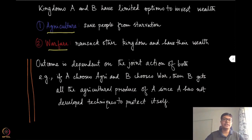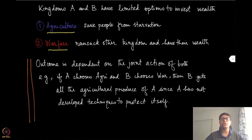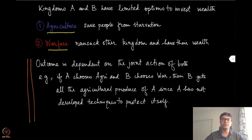One important point is that in this kind of scenario, it is not only sufficient to conclude what will happen based on your own actions. If you were one of these kingdoms and you are investing on agriculture, you cannot be sure what your payoff will be because you do not know what the other kingdom is going to do. If they invest on warfare, they might attack your kingdom, and you will have no defense.